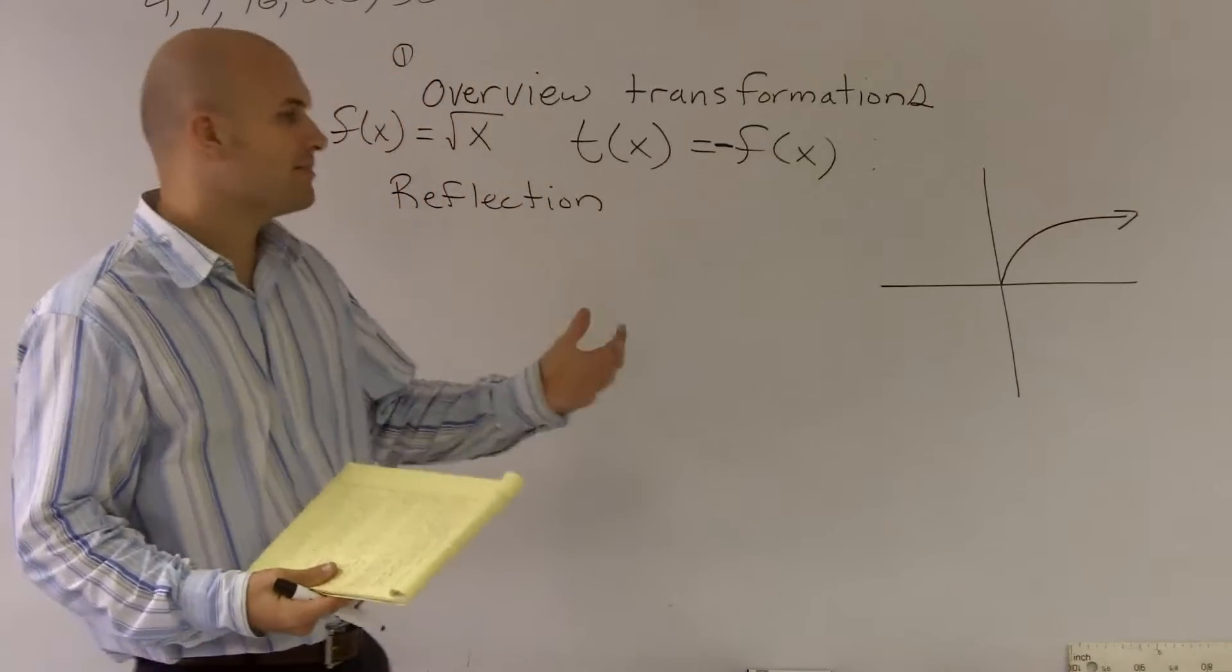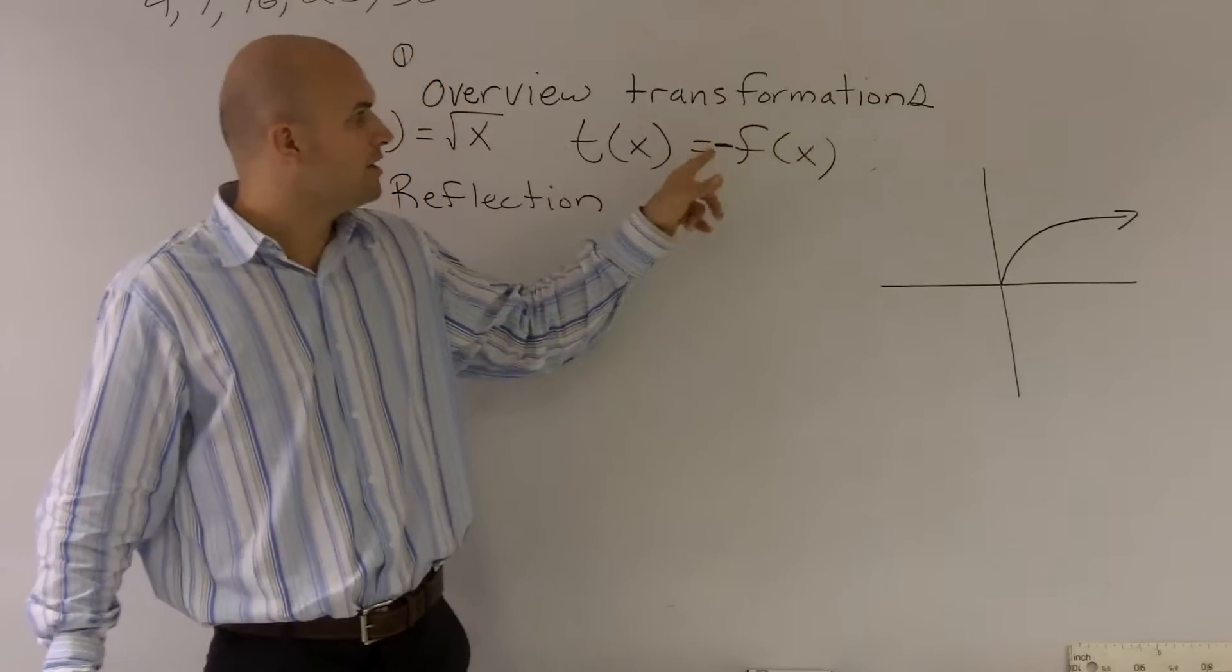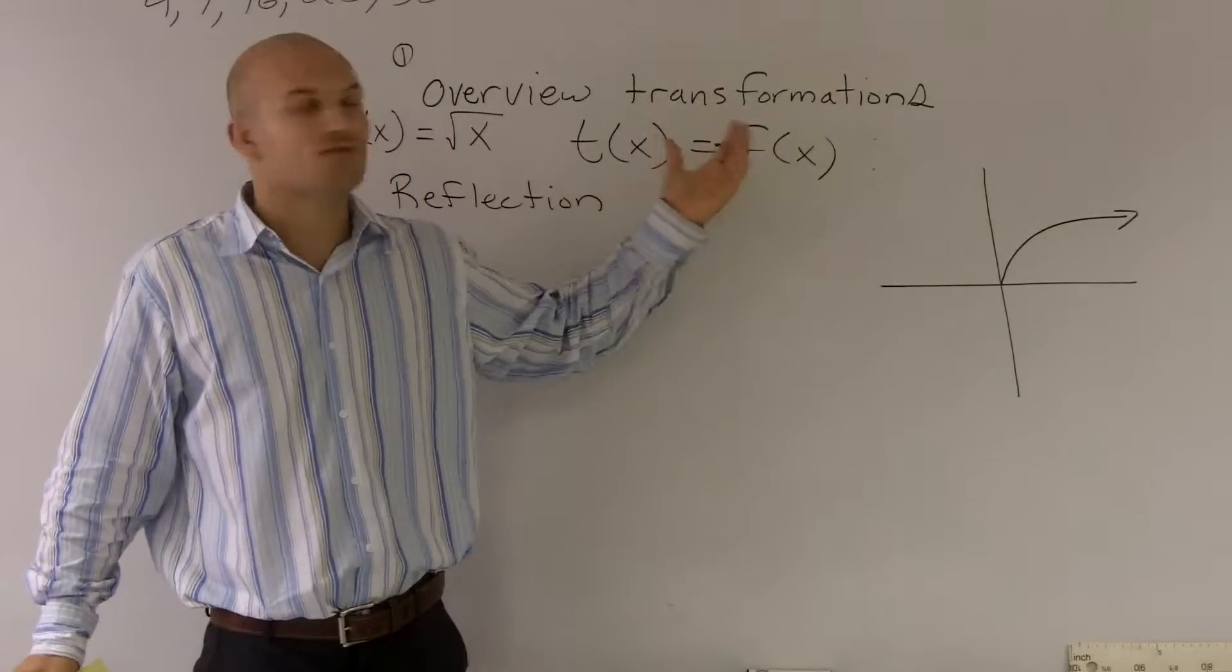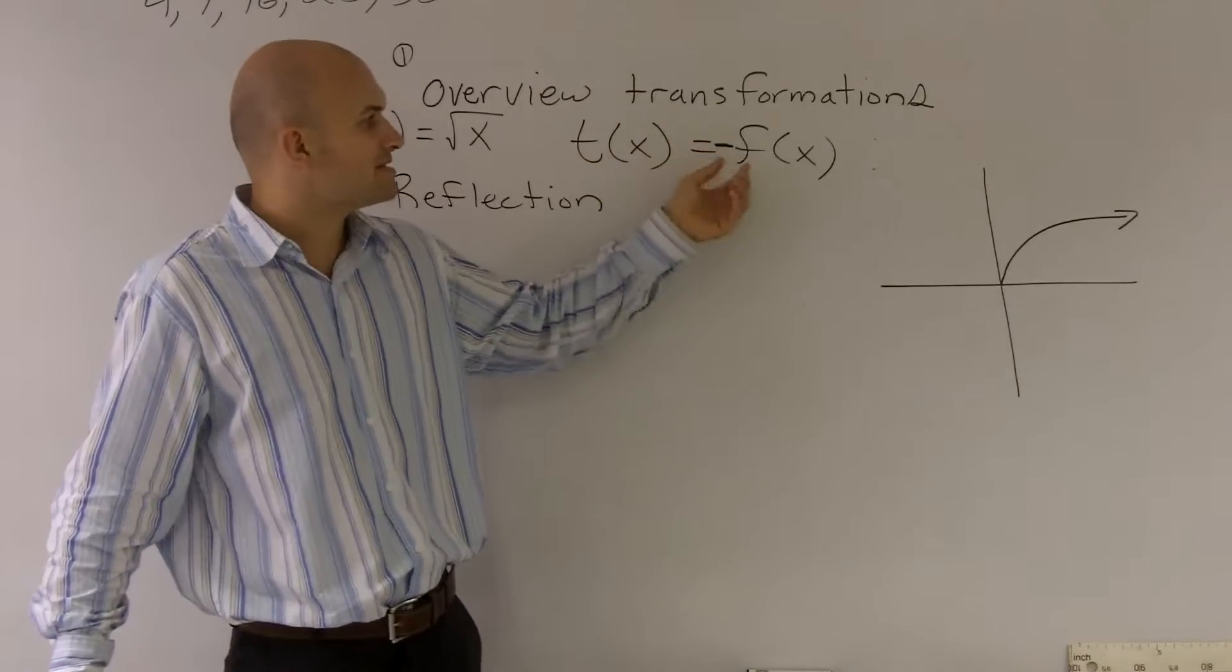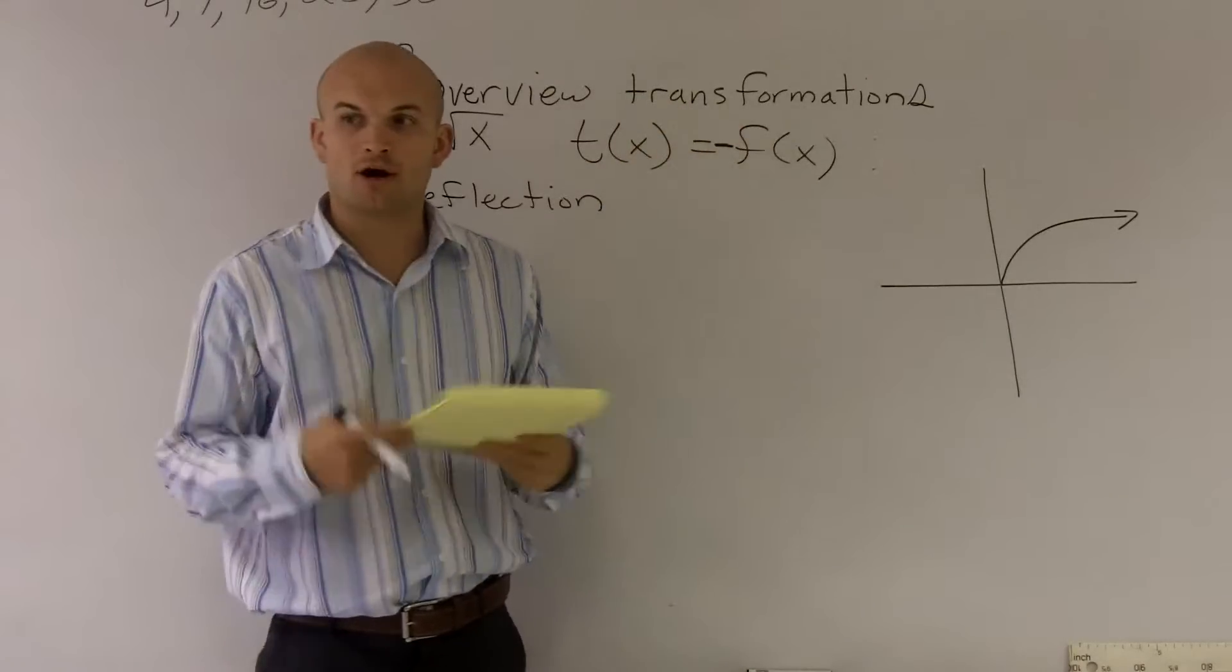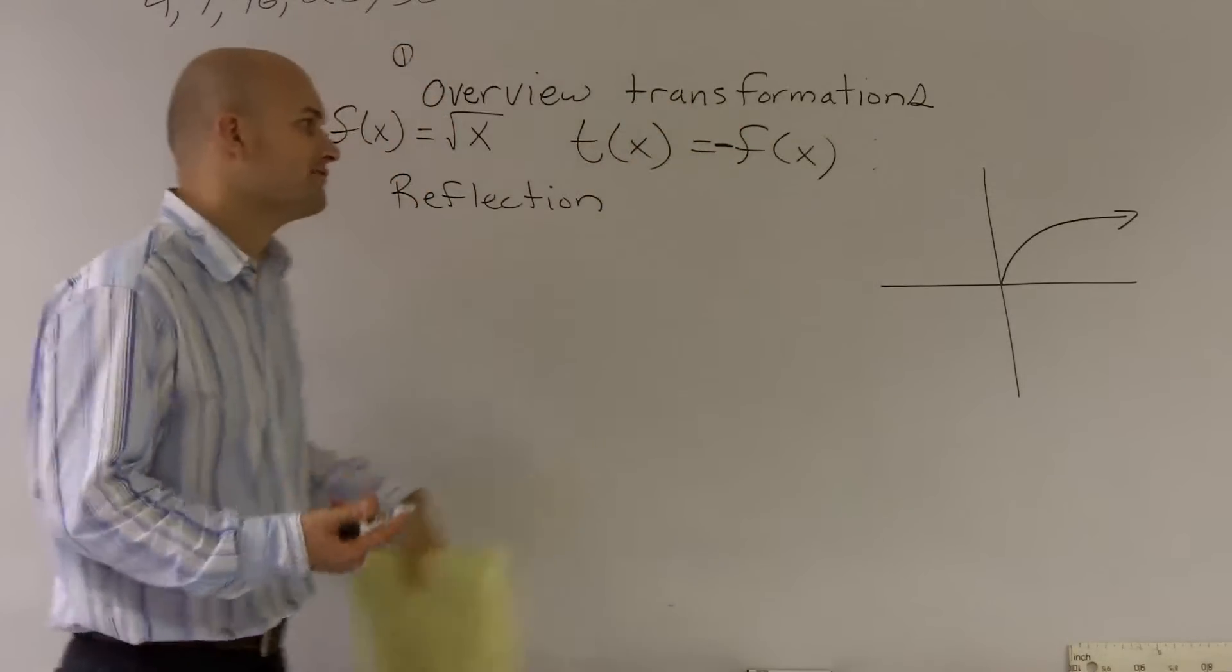Well, if we can kind of think and remember that the same thing is going to happen now, when we multiply our function by a negative 1, the same thing happens. It's our y coordinates of our points in our function that are going to get affected.